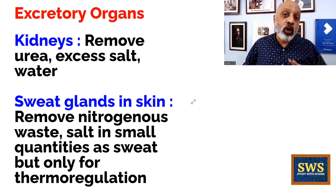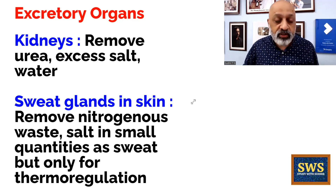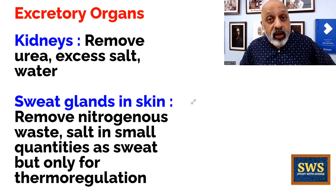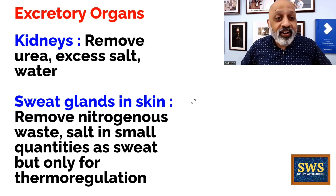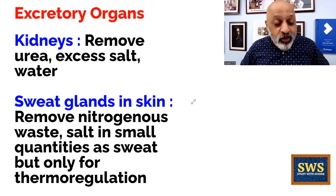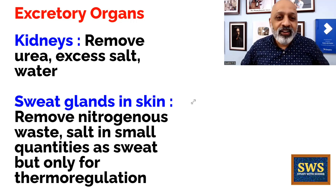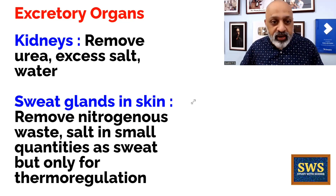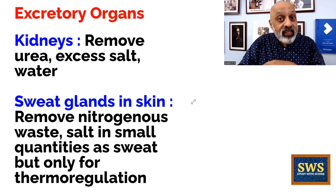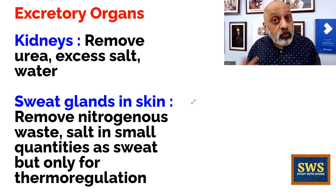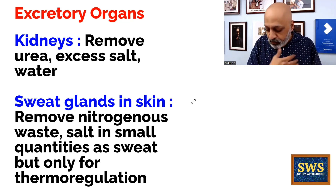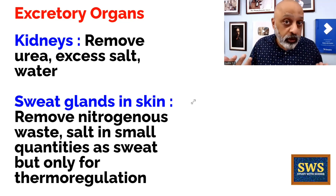What are the different excretory organs we will be considering? The most important ones are the kidneys — we have two kidneys. Kidneys remove urea, excess salt, and water. That is the major function of the kidneys. Then there are the sweat glands in the skin — they also remove nitrogenous waste and salt in small quantities, as the main purpose of sweat is basically thermoregulation: to regulate the body's temperature. When you run fast or do some work, you sweat it out.